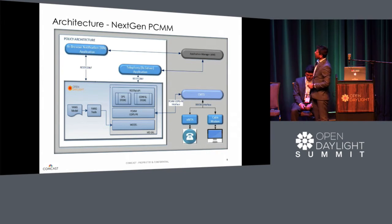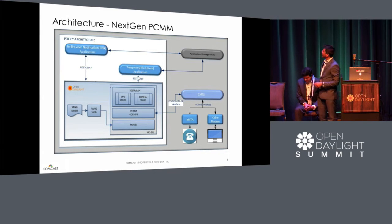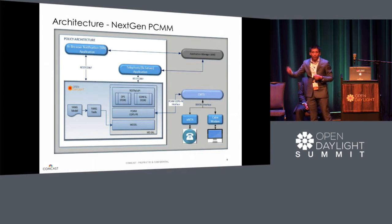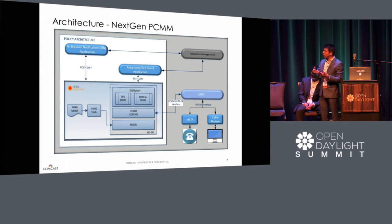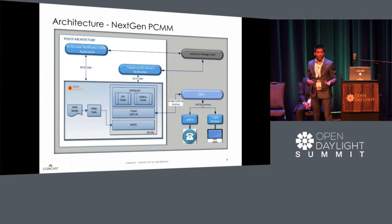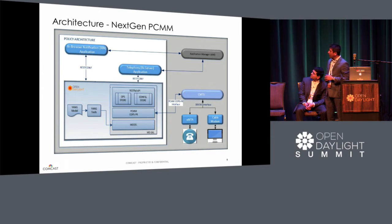We're going to talk about IBN, which is our in-browser notification platform. We have a third-party application referred to as the application manager, which initiates a request. When you send the request, you need at minimum the subscriber IP that you would like to target to send the notification. That goes via the REST API, and your IBN component will convert that message, sending it to the ODL layer, leveraging YANG and MD-SAL, finally converting the message to COPS so it can be delivered to the CMTS — the hub where the cable modem is connected — and relayed to the subscriber to see the notification.